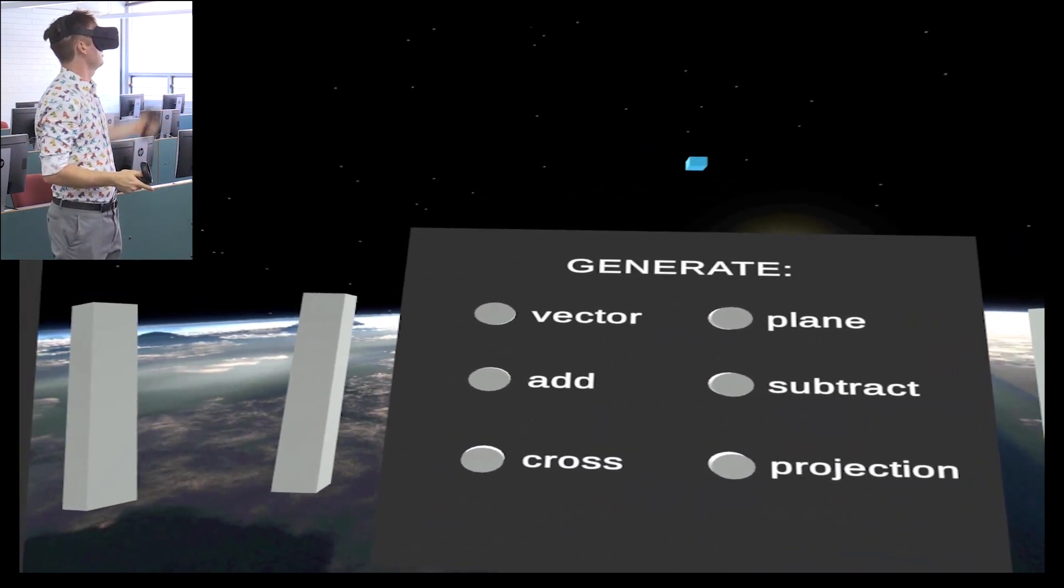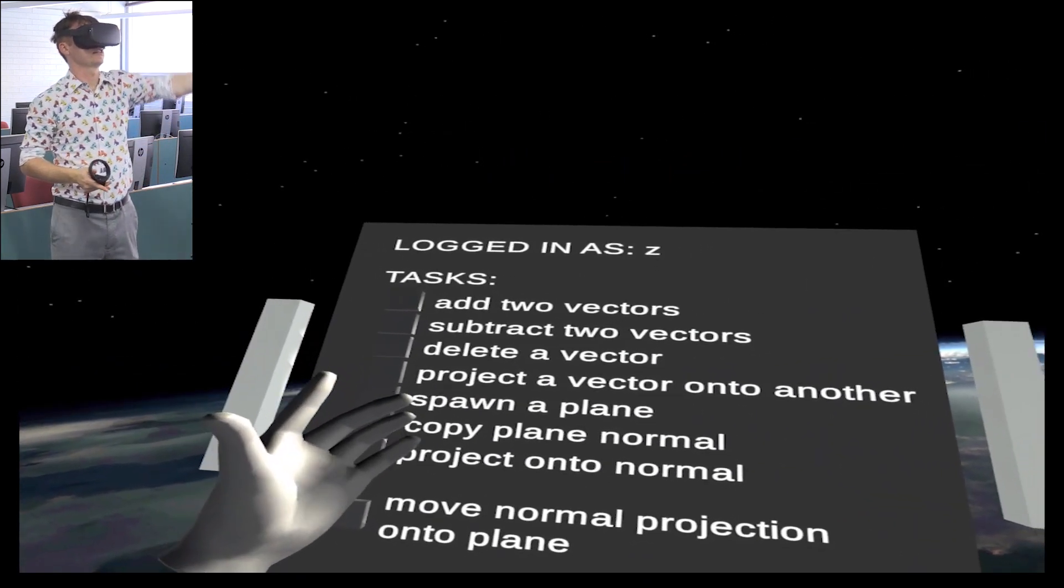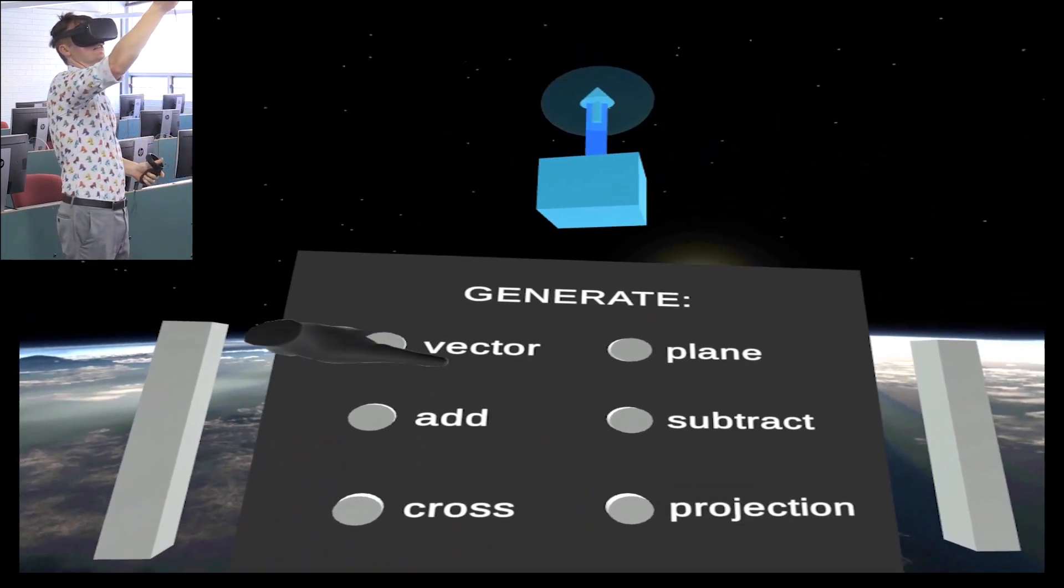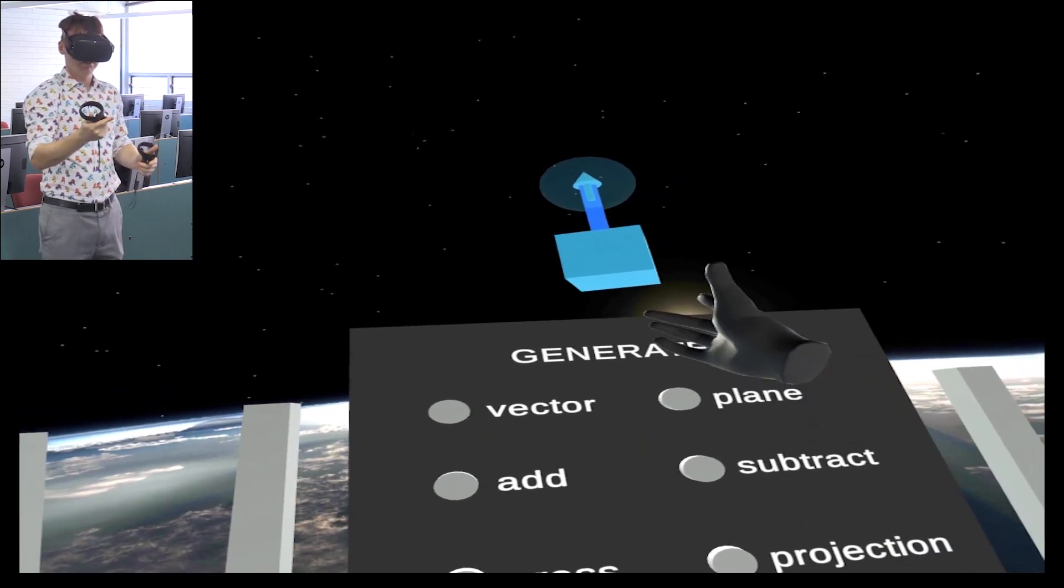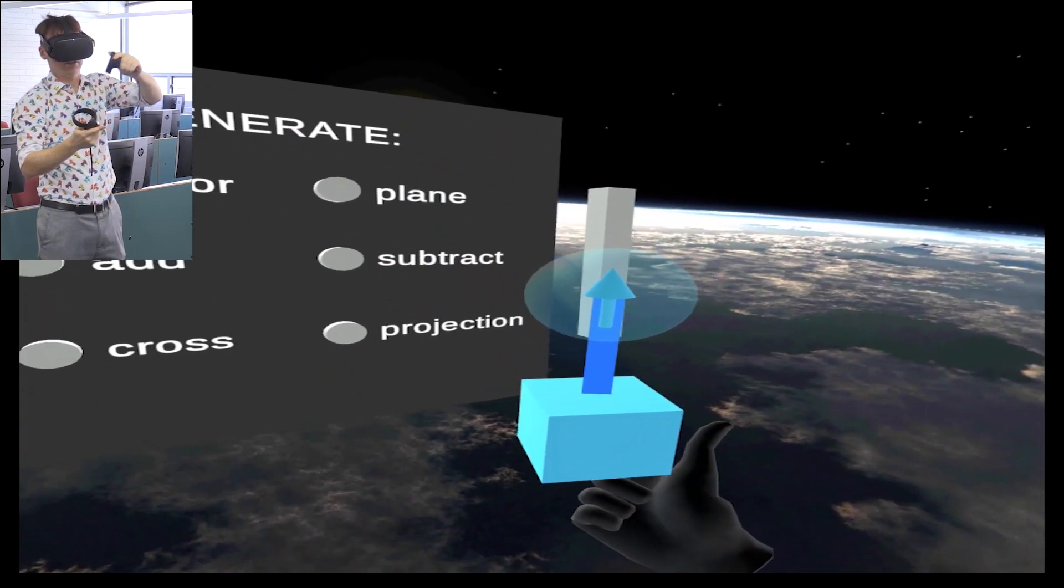My first task is to add two vectors. I suppose that means I need a vector. Shiny. And vector is really just a length and an orientation. Here you can see I can give it all sorts of lengths and all sorts of orientations.